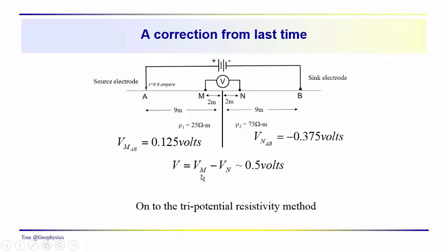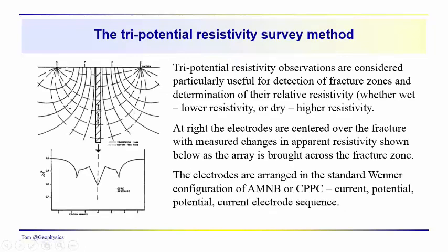Let's get on to the tri-potential resistivity method mentioned last time. With the switch box, you can change the potential electrode measurements from the center two electrodes — the standard for the Wenner array — to perhaps other electrode combinations. In this particular case, we've got low resistivity over a fracture zone. We typically interpret low resistivity as more porous and wetter, more permeable. But a fracture zone could also have high resistivity.